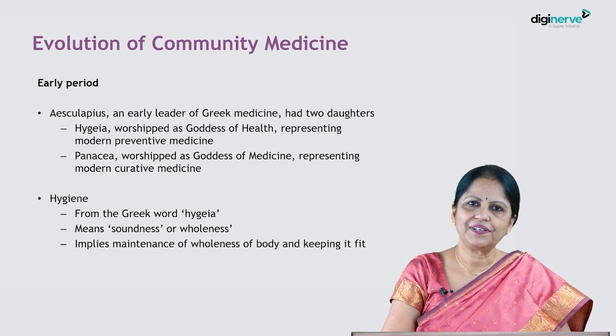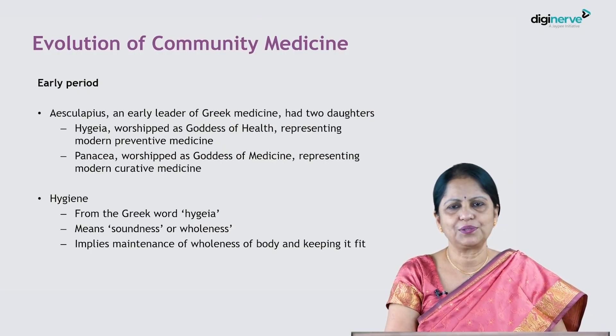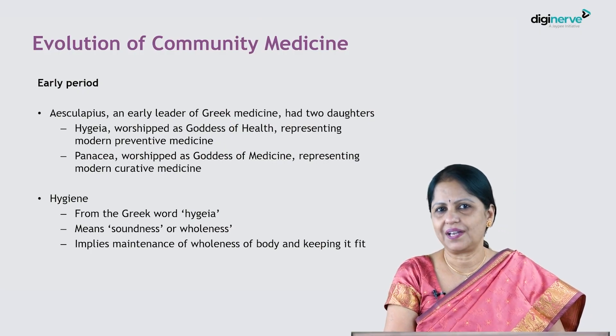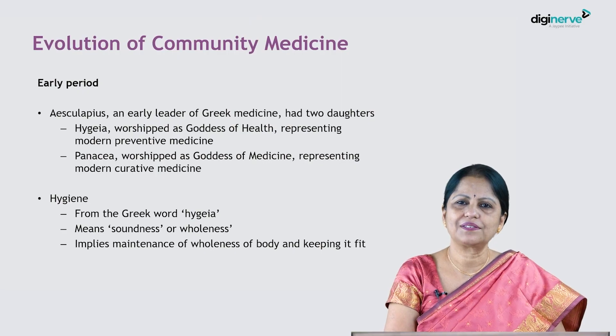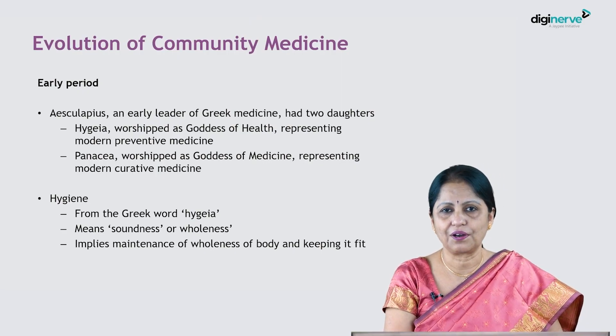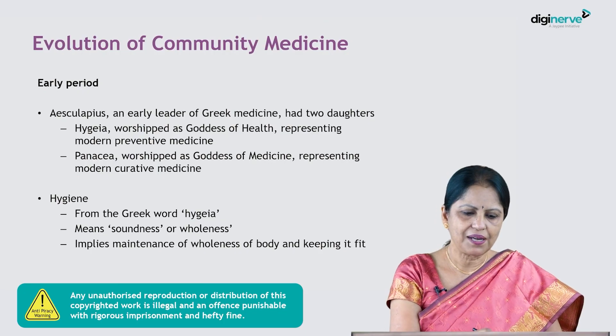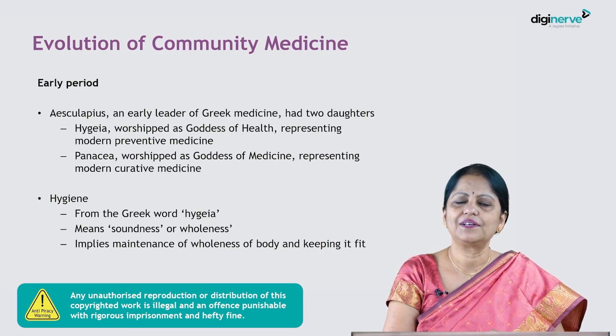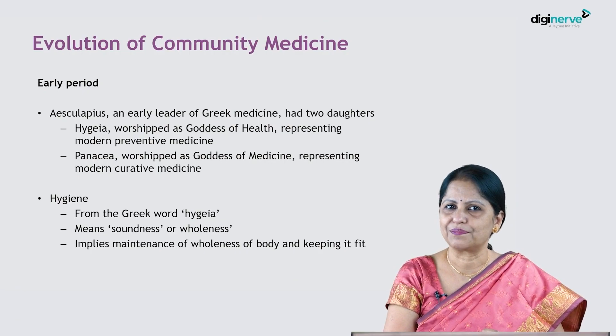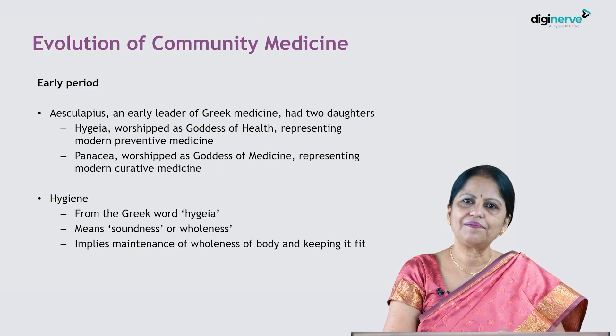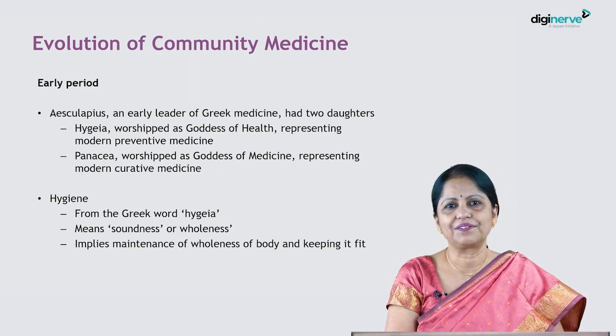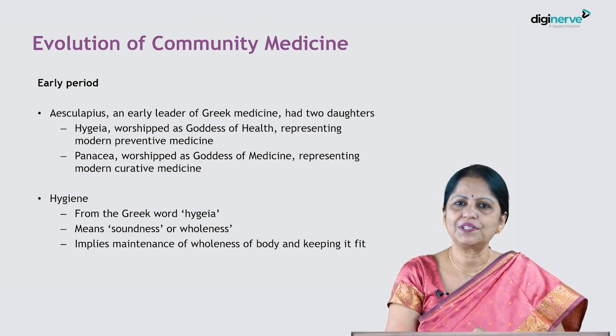Let us look into how this discipline of community medicine evolved. In the early period, there was a Greek leader, Escalapius, who had two daughters, Hygieia and Panacea. Hygieia was worshipped as the goddess of health — this is the concept of modern day preventive medicine. Panacea was worshipped as the goddess of medicine, that is modern day curative medicine. Hygiene came from goddess Hygieia, which is a Greek word meaning soundness or wholeness — implying wholeness of the body and keeping the body fit and sound.